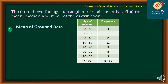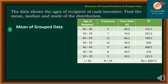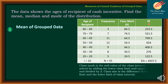To solve the mean of the grouped data, let's look at the age of recipient and the frequency. The first thing we will do is add two columns: one for the class mark and one for the product of the frequency and the class mark. The class mark is the mid-value of the class interval. For example, 80 plus 89 divided by 2 gives us 84.5; and 70 plus 79 divided by 2 equals 74.5.